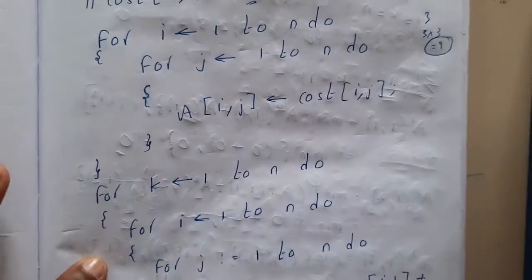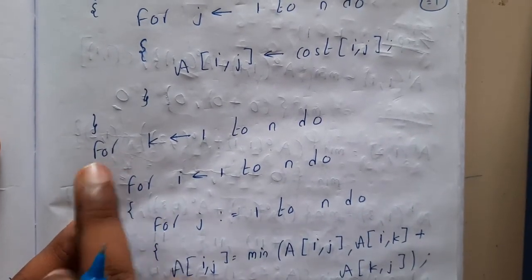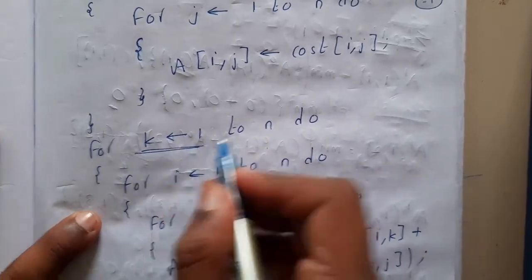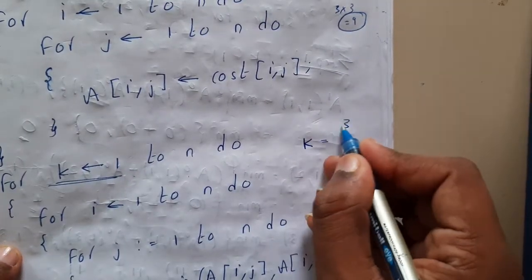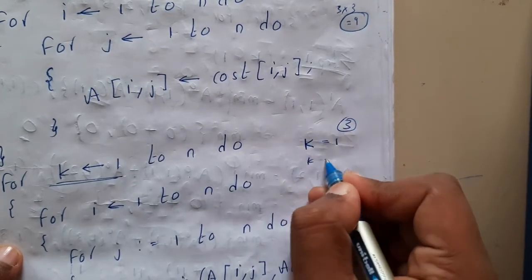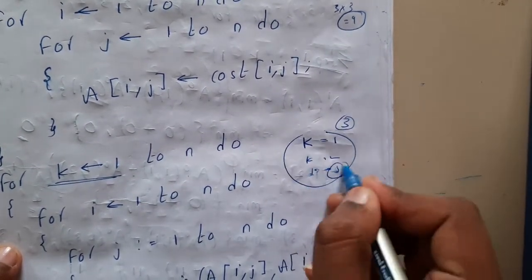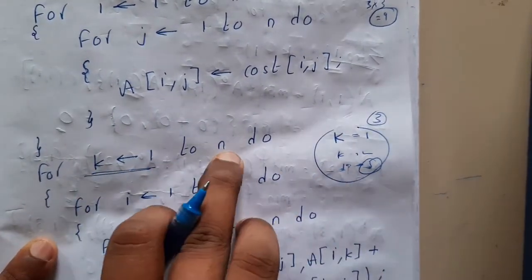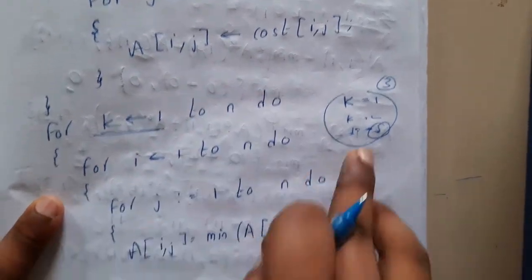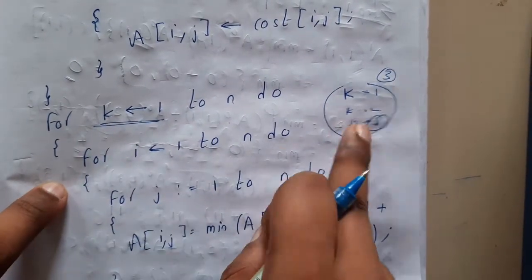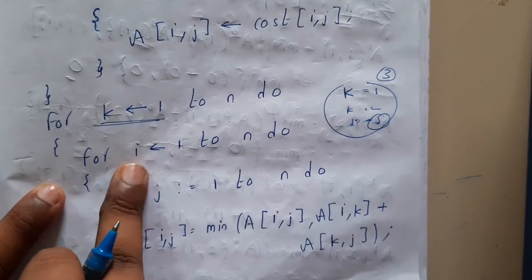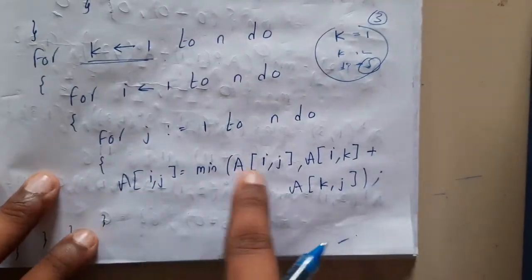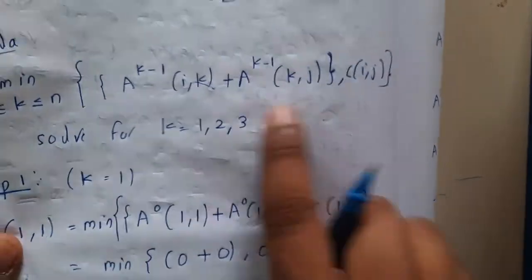After initialization, we compute based on our formula. For k = 1 to n — this is the k value. If you recall, for three vertices we said k = 1, k = 2, k = 3. For n vertices we do it n times. So from k = 1 to n (which is 3 for three vertices), this outer loop handles that. The two inner loops, i = 1 to n and j = 1 to n, apply the formula.